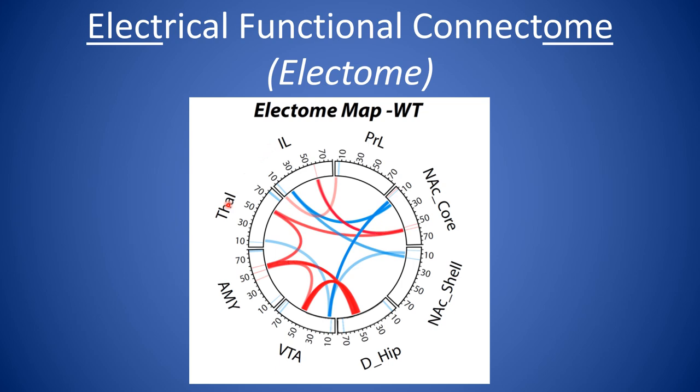Here's what our map looks like. We'll call this our electrical functional connectome or electome for short. Around the rim, you can see all of our power measures. There's 80 per brain area for each frequency and for eight areas: prelimbic cortex, nucleus accumbens core, and the other areas we've been recording. Then you can see each of the coherence measures, which are our circuit measures, between areas. This is an example of a coherence measure between VTA and thalamus.